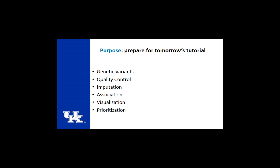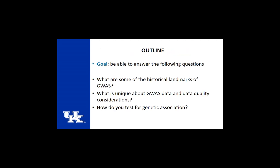In the tutorial, there's a workflow diagram that talks about the pieces of GWAS — genetic variance, which we covered earlier this morning, quality control, imputation, and so on. My goal is that you can answer these questions at the end of this talk: What are some of the historical landmarks of GWAS? We saw some earlier this morning, a great talk about Allison, and I'll build on some of that.